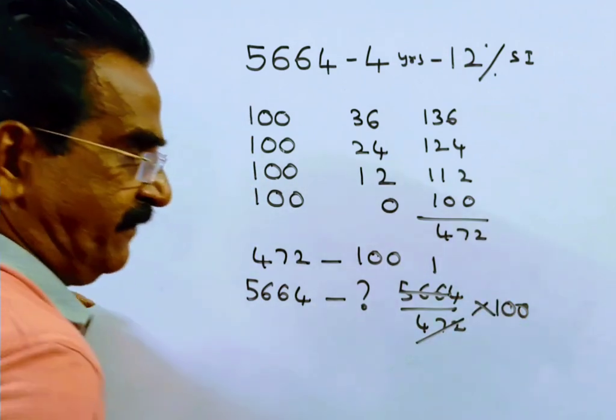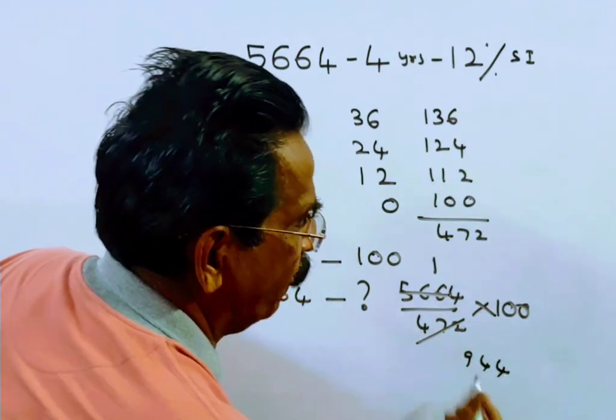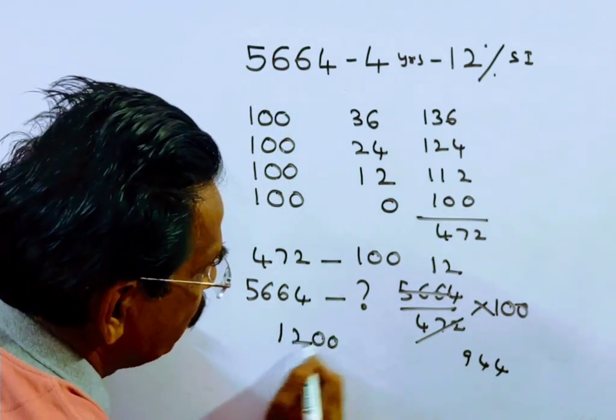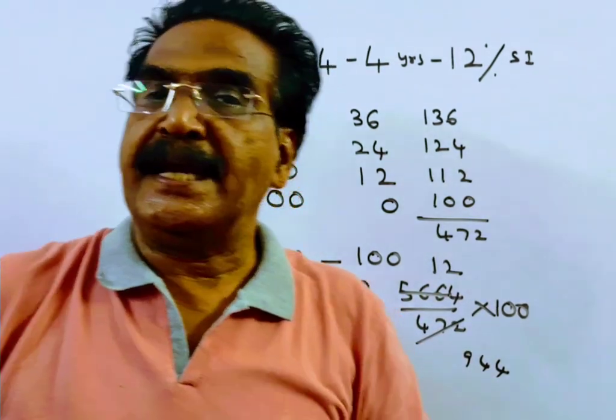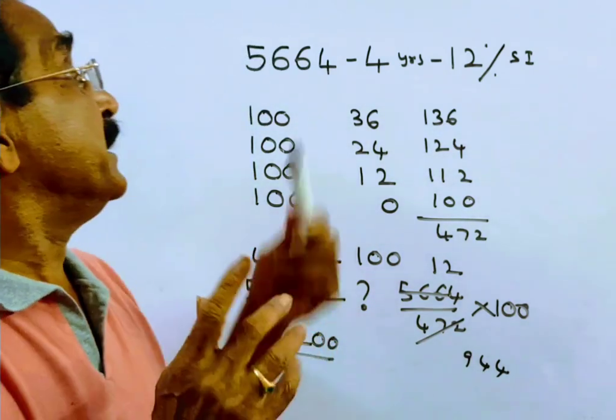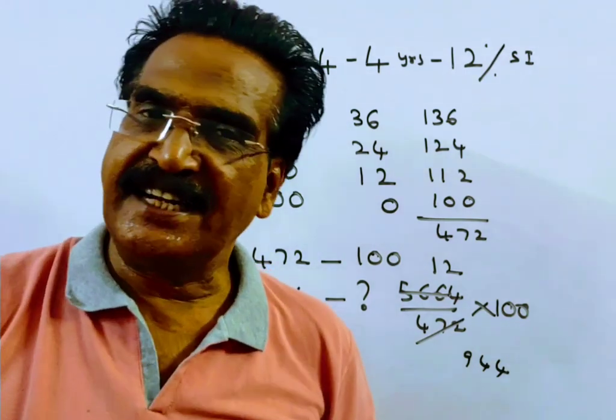Calculating: 472 goes into 5664 twelve times... 472 times 2 is 944. So you have to pay an annual installment of rupees 1200 to discharge the debt of 5,664 in 4 years. Friends, thank you.